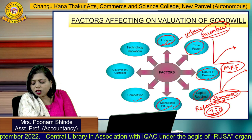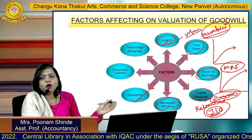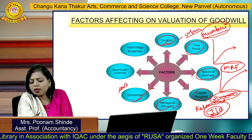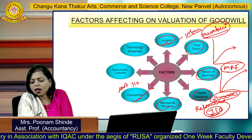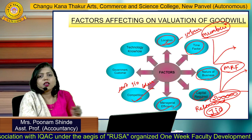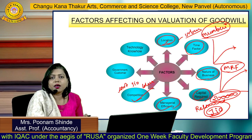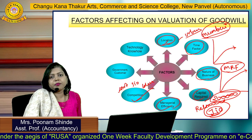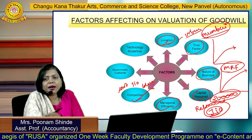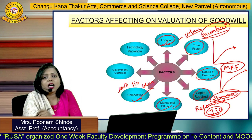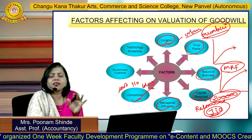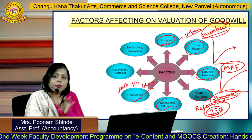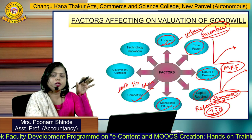Competition is another factor. Currently in telecom there are only three major players: Airtel, Jio, and Idea-Vodafone. Competition affects goodwill — if you can manage your company well in a competitive environment, your goodwill will go up.